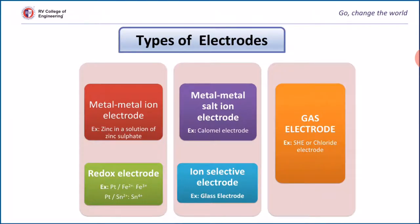First we will discuss types of electrodes. When a metal rod is in contact with its own ions — for example, zinc dipped in zinc sulfate, copper dipped in copper sulfate, silver in contact with silver ions, lead in contact with lead ions — they are considered metal-metal ion electrodes. When a metal is in contact with an insoluble or sparingly soluble salt of the metal dipped in a solution containing a common anion, it is known as a metal-metal salt ion electrode. The calomel electrode, consisting of mercury in contact with insoluble mercurous chloride which is in contact with KCl solution, is a typical example of a metal-metal salt ion electrode.